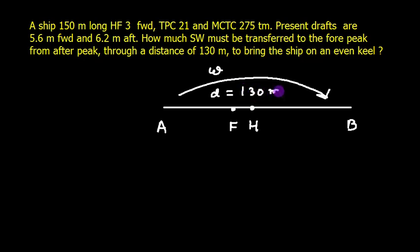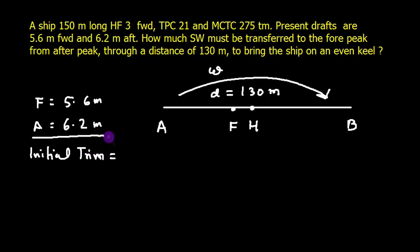To bring the ship on an even keel. So first, let's find what are the forward draft. The forward draft is 5.6 meters and aft is 6.2. So initial trim, let me just set the angle. Initial trim is going to be 6.2 minus 5.6, which is 0.6 meters by stern.